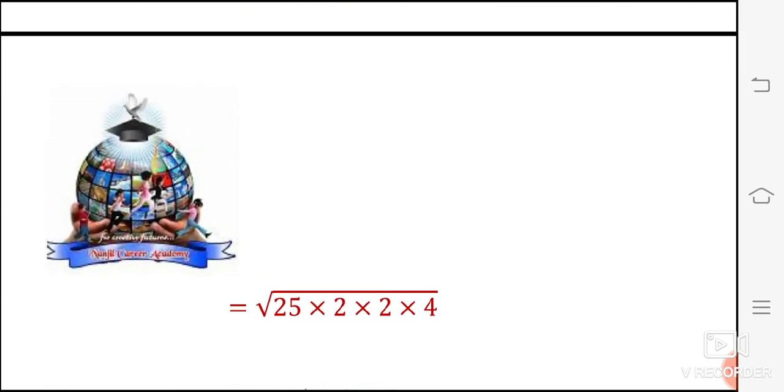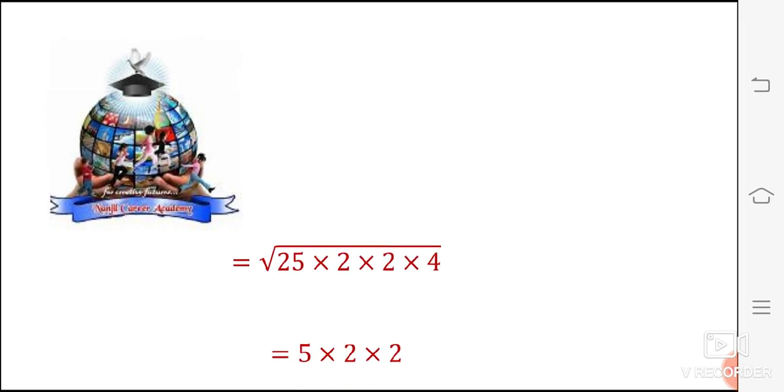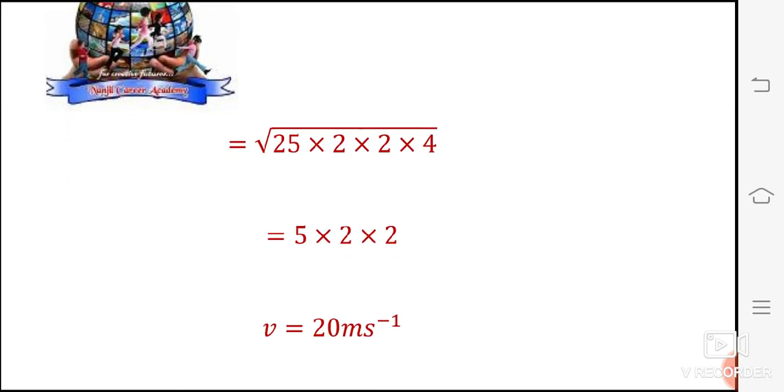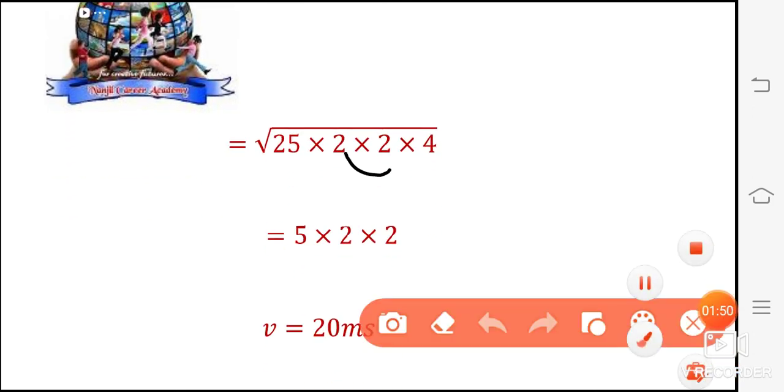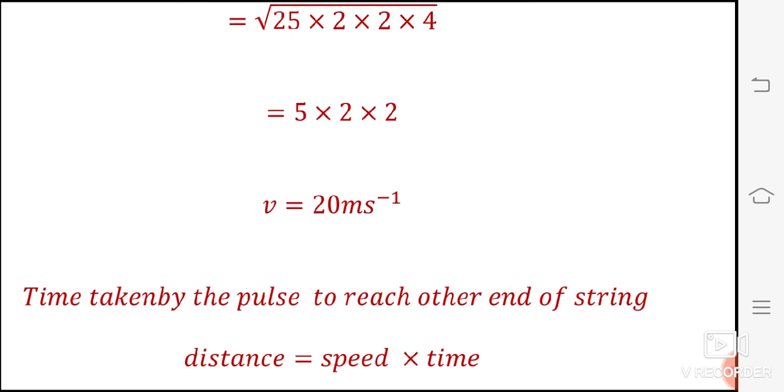It can be written as square root of 25 into 2 into 2 into 2 into 4. So square root of 25 is 5. 2 into 2 is 4. So root of 4 is 2, root of 4 is 2. So that is equal to 5 into 2 into 2. So V is equal to 5 into 2 into 2, 5 into 4 is 20 meter per second.